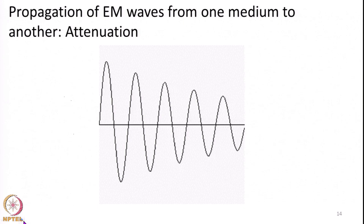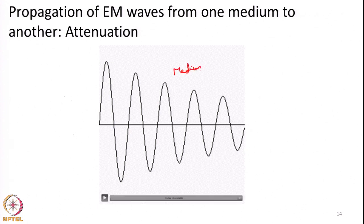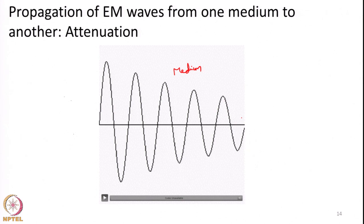This is a schematic representation of attenuation: as EMR passes through a medium, its amplitude decreases progressively, and it may ultimately be totally absorbed within the medium — its amplitude reduces and hence its total energy content reduces as well.